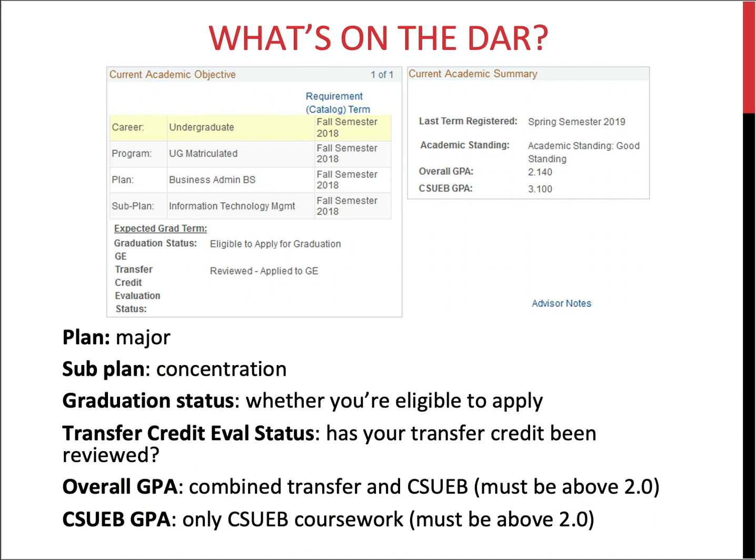The first thing you'll come across on the DAR is the career, which tells whether you're an undergraduate or graduate student and determines when you started at the university. The next line is the program, which tells you what your catalog year is for your general education and graduation requirements — most likely the term in which you started at the university.